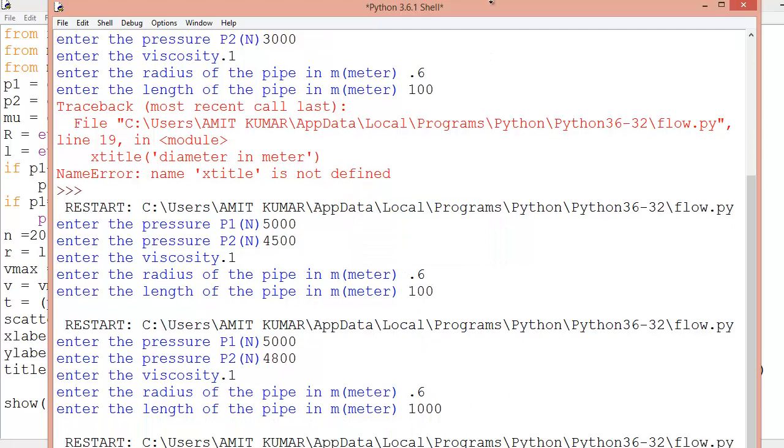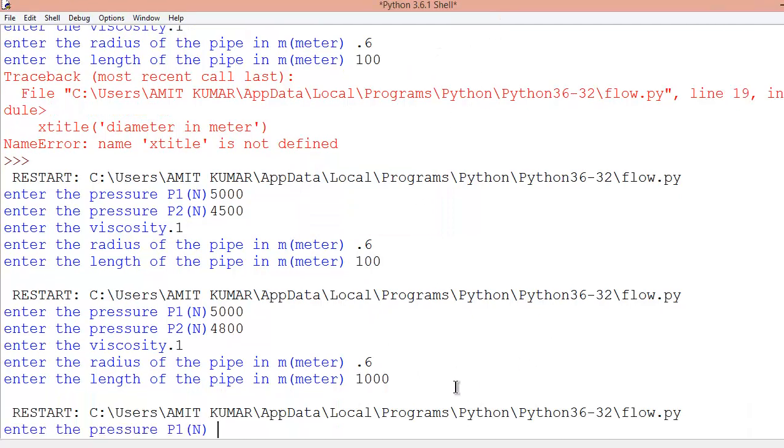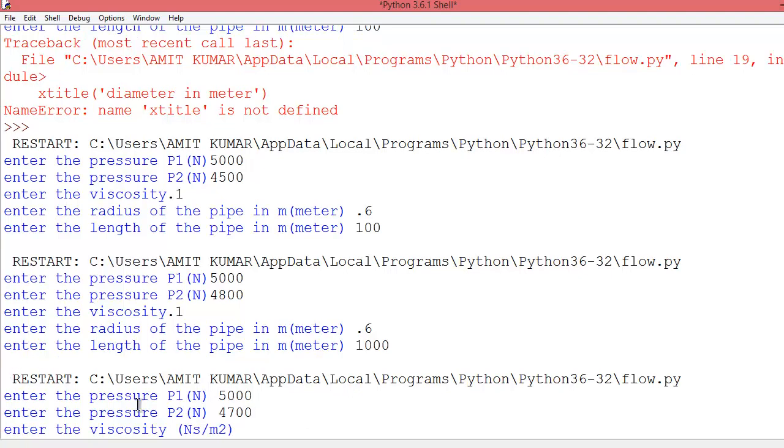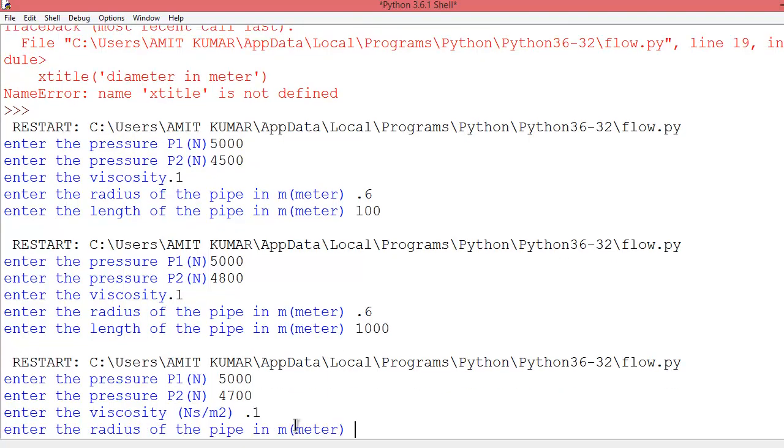Now enter the value of P1. Let's say 5000. Enter the value of P2. Let's say 4700. Just remember these units are in Newton. Enter the value of viscosity 0.1.